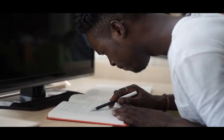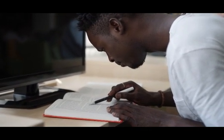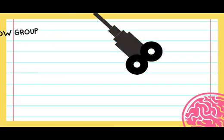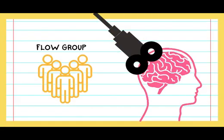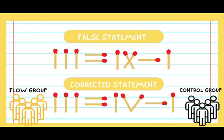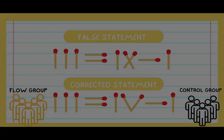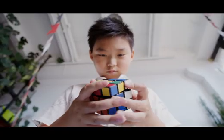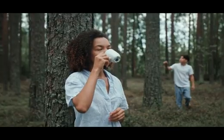Individuals experiencing flow have a heightened creative process. In a study, scientists experimented on two groups: the flow group and the control group. The flow group underwent transcranial magnetic stimulation, resulting in a heightened sense of consciousness found in flow. Both groups were tasked to solve incorrect arithmetic statements of Roman numerals presented as matchsticks by moving them while maintaining their current number. Based on the experiment, forty percent of the flow group successfully solved the problem compared to the control group, showing that flow is a part of creative thinking.